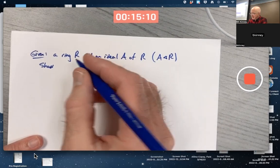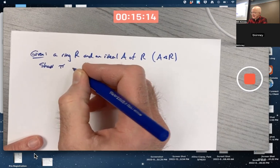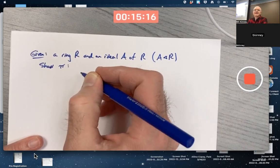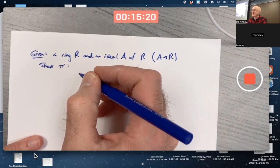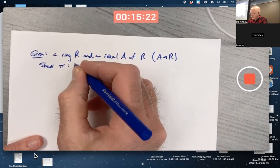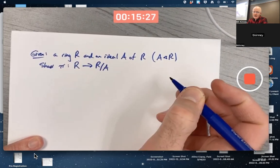We want to show that the mapping... the book calls this mapping, if you look back at the corresponding theorem in chapter 10 about group homomorphisms, gamma. But I was always told to call it pi, not because it's the number pi, but because pi starts with P, and P also is the first letter in the word projection. It's a projection mapping of R onto this factor ring.